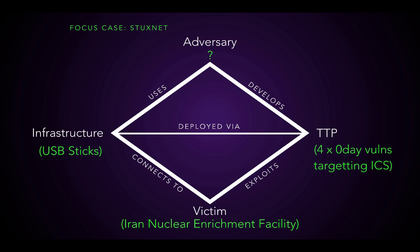But we still see that the adversary is blank. Now we have to start using some hypotheses to figure out who that would be and why they would do it. Think about who would have the ability to have four different zero-day vulnerabilities specific to Siemens industrial control systems. Not many people in the world would have four vulnerabilities on specific ICSs, so already we eliminate most of the world.